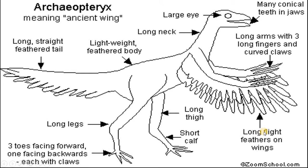Further, there are long flight feathers on the wings. Archaeopteryx shows reptilian characters as well as avian or bird characters. There is a long thigh and a short calf. Similarly, three toes facing forwards and one toe or hallux facing backwards. Then a lightweight feathered body and long straight feathered tail. These are some of the important features of Archaeopteryx.